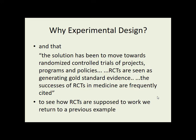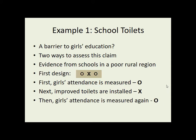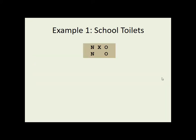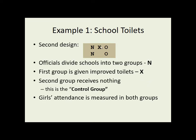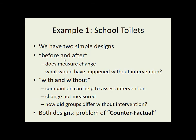To show how they work, we're going to go back to an example from the first lecture — school toilets. Can these really be barriers to girls' education? If we recap, there are two possible ways to assess the claim. You get some evidence from schools in a poor rural region. The first design: measure girls' attendance, then improve toilets, then measure attendance again — the before and after design. The alternative design divides schools into two groups: give the first group improved toilets and the second group nothing — the control group — then measure and compare attendance. The advantage of before and after is it does measure change, but the change might have happened anyway even without the toilets. With the with/without design, the comparison helps address the intervention by showing what would have happened without it, but change isn't measured and you don't know if there was a difference between the groups before the intervention.